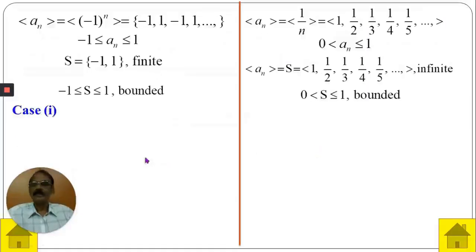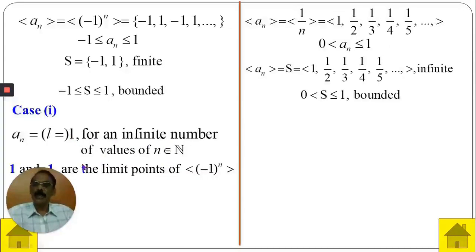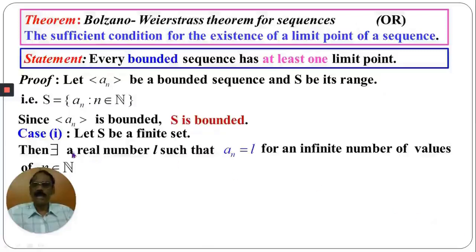Looking at Case 1 with the finite range set: a_n equals 1 for an infinite number of values of n, so 1 is a limit point. Similarly, a_n equals -1 for an infinite number of values of n. Therefore, both 1 and -1 are limit points of the sequence (-1)^n. Thus, if S is a finite set, there exists a real number l — either 1 or -1 — such that a_n equals l for infinitely many values of n.